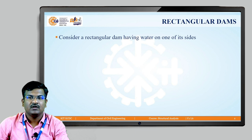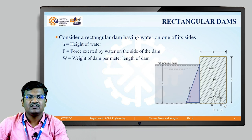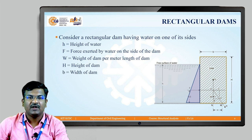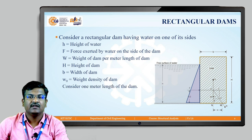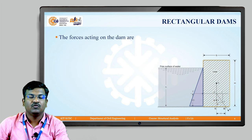Small h is the height of the water. Capital F is the force exerted by the water on the side of the dam. W is the weight of the dam per unit length. Capital H is the height of the dam, small b is the width of the dam, and w-naught is the weight density of the dam material. We are considering one meter length of the dam for analysis purposes.